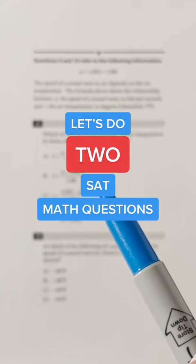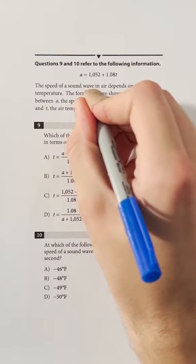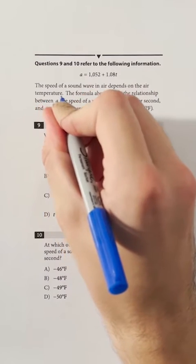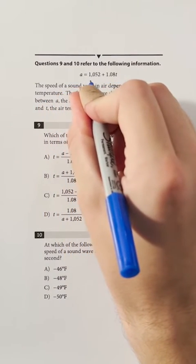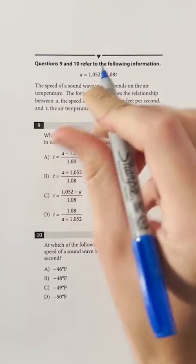Let's do two SAT math questions in one video. The speed of a sound wave in air depends on the air temperature. The formula above, A equals 1052 plus 1.08T,